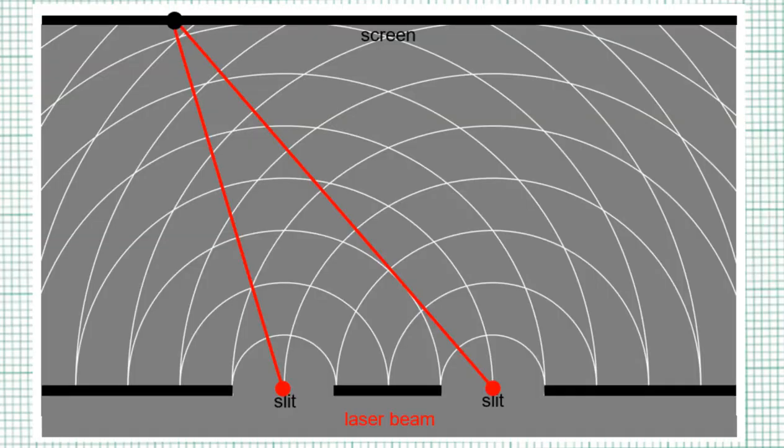Actually the double slit interference pattern is conceptually quite easy to explain. So each of the slits, when they are lighted up by the laser beam, they act like two wave sources.